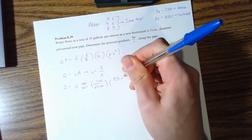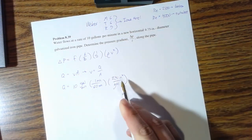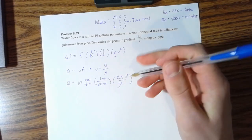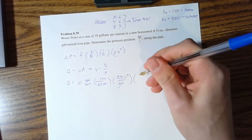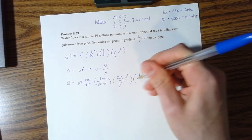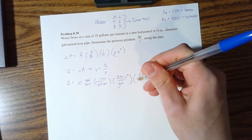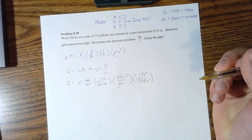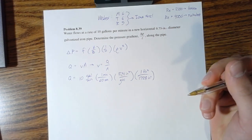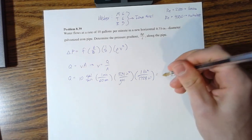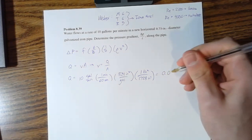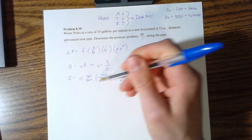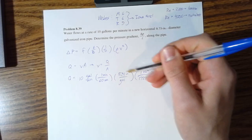So gallons per minute: one minute for every 60 seconds, 231 inches cubed per gallon—don't worry about knowing that off the top of your head, that's something that would be given to you on an exam, just like a foot cubed per 1728 inches cubed, but that's just 12 cubed. I figure you'll be able to do that on your own.